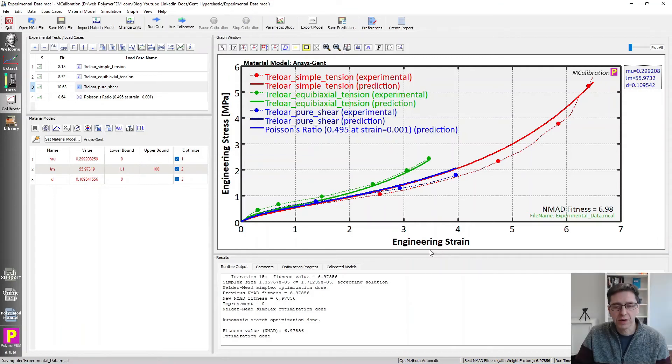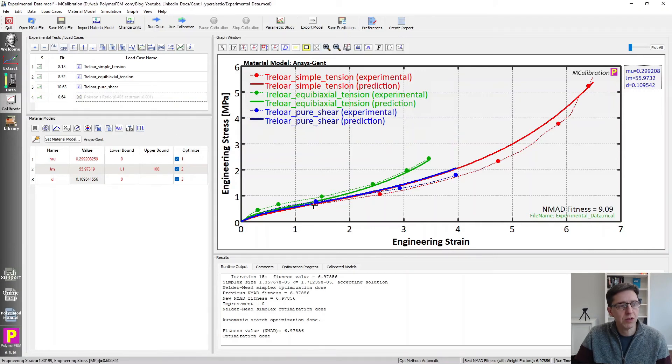And a few seconds later, the calibration is done. You see that I activated the Poisson's ratio condition here, too. So we can search for the D parameter and not just guess a number. Again, let's turn this off now that we've searched for it. That gives me a graph of the data that we had and the predictions from it.